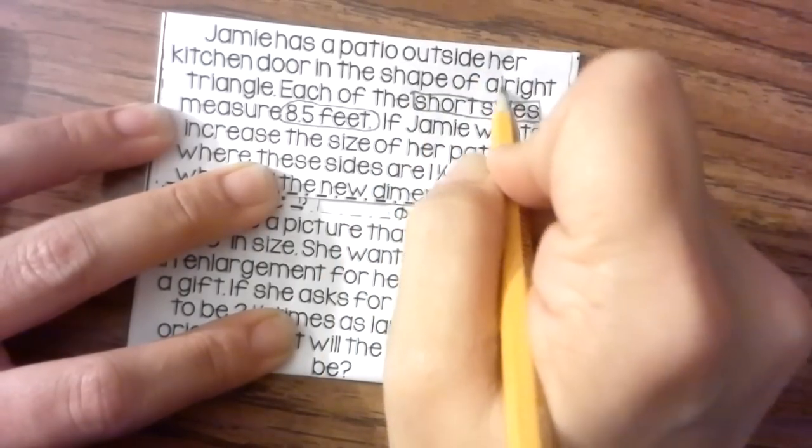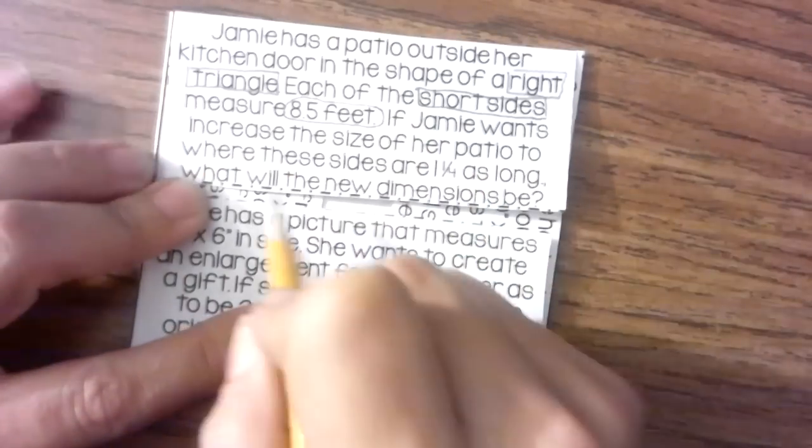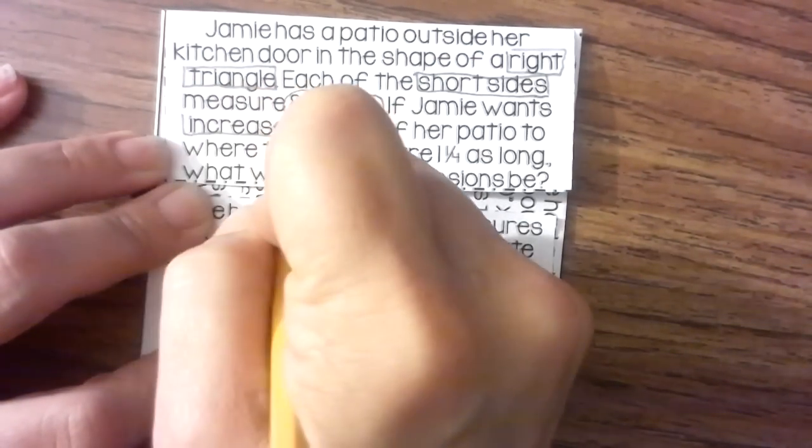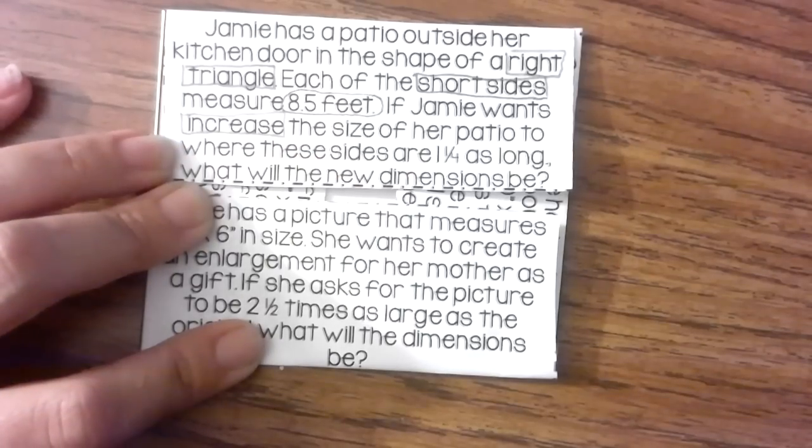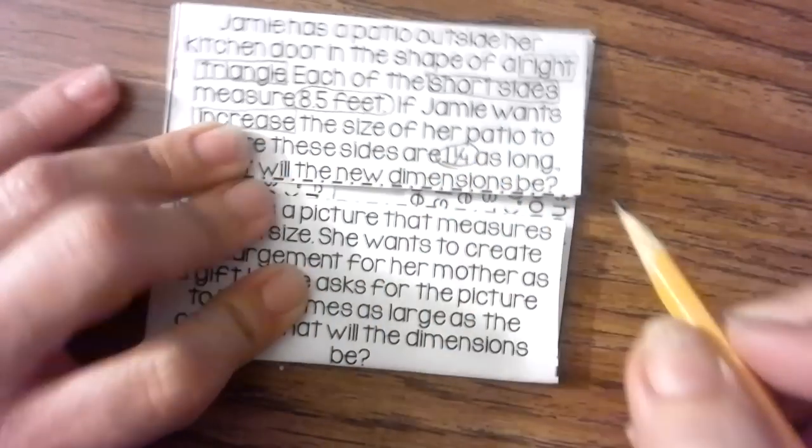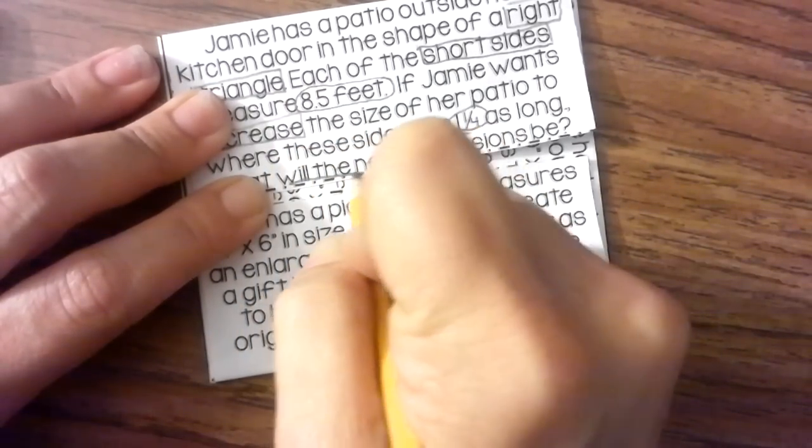It's a right triangle and she wants to increase the size of her patio to where the sides are 1 and 1/4 times as long. What will - and I'm going to underline this - the new dimensions be?